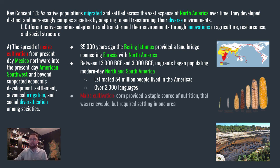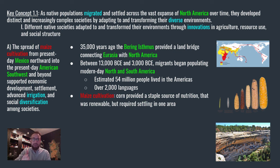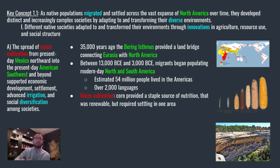Now let's focus on the descriptor: maize cultivation. Anytime terms are in red, those are things you absolutely have to know because they are proper noun terms mentioned by name by the College Board. Things in green represent geography. Things in light blue represent words that, if you don't know what they mean, you need to look those up on your own — they're higher academic language. Things in yellow are still important proper nouns, good to know, but not as critical as the red terms.